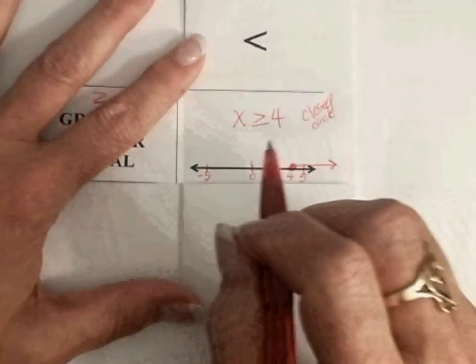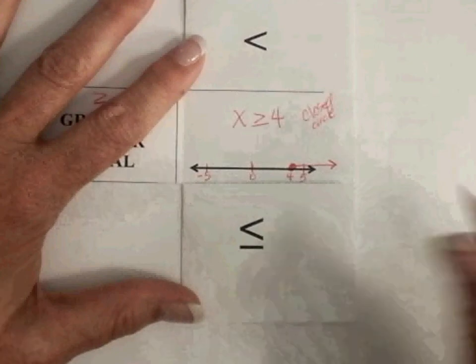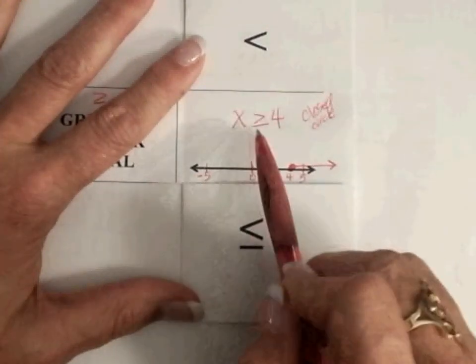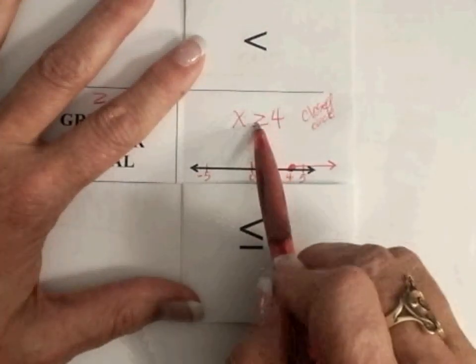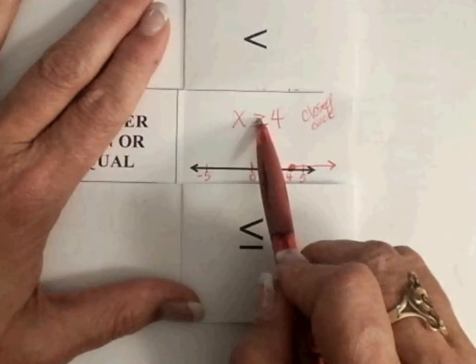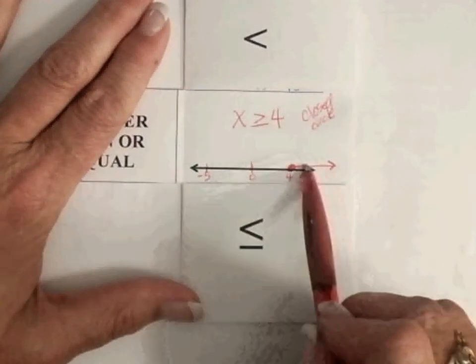And one way to remember which way to point your arrow, which way to draw your arrow, if your x is first, it actually goes the same direction as your sign up here. So see how that points to the right? This goes to the right as well.